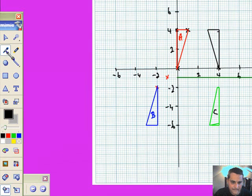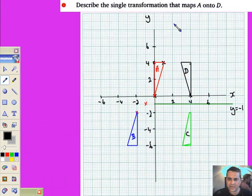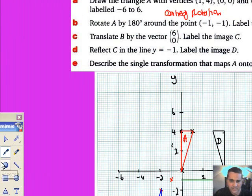C is reflected in the line y equals minus 1 to end up with brand new triangle D. Let's call that D. Now describe the single transformation that maps A onto D. These questions are getting rather predictable.